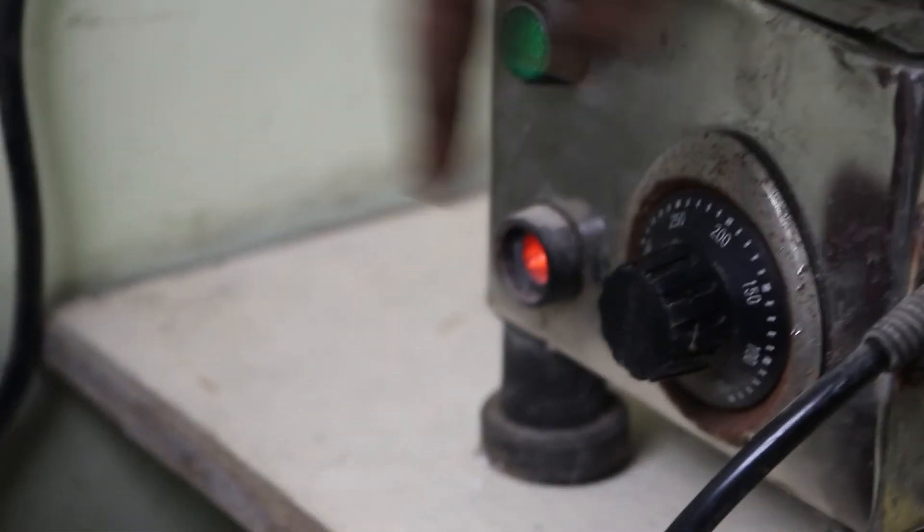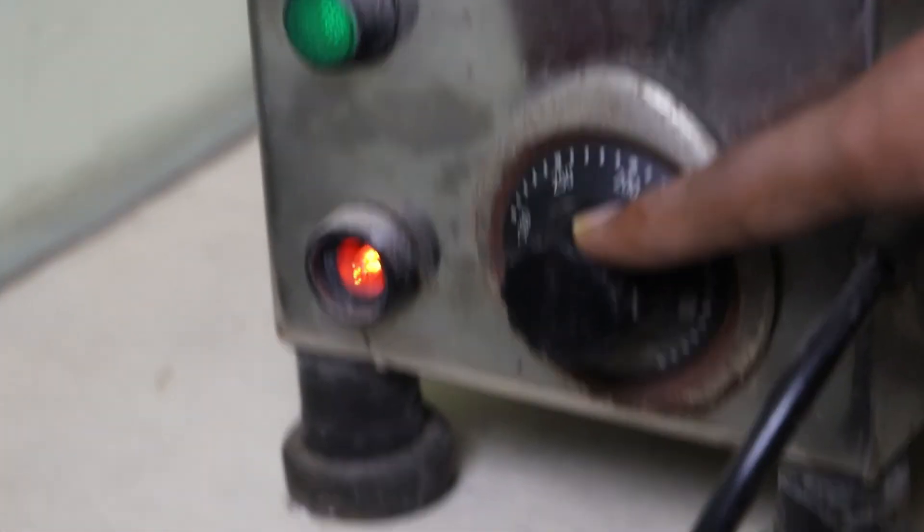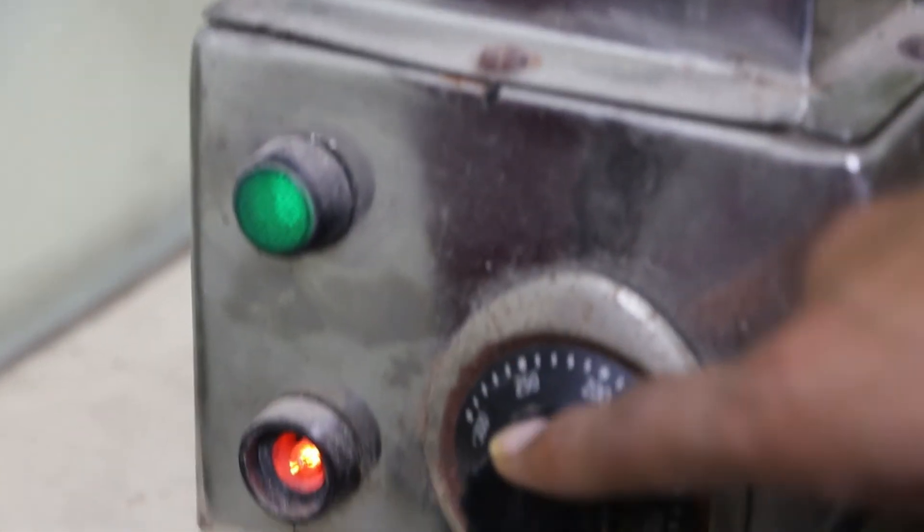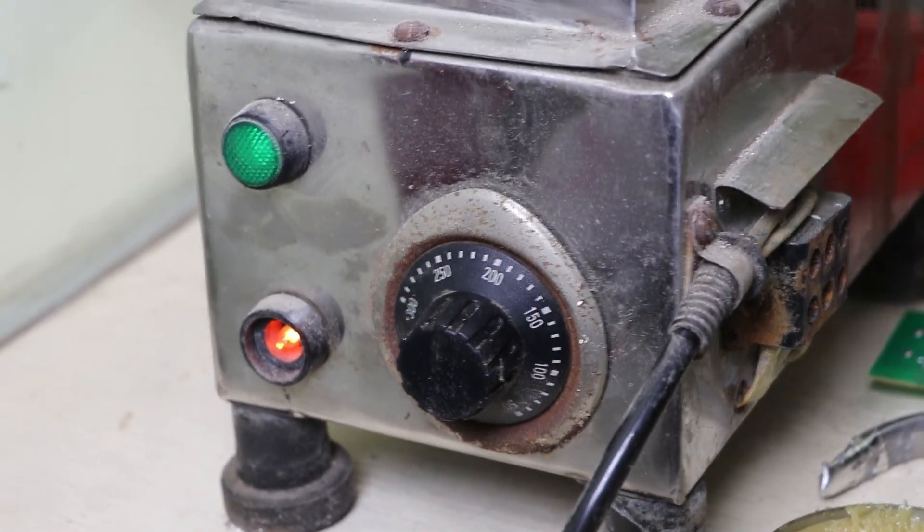Make sure your temperature doesn't go above 350 degrees Celsius. Keep it between 200 to 280 degrees Celsius. You can control the temperature through this potentiometer. That's all about the dip soldering machine. Thank you for watching.